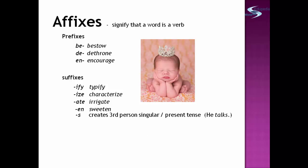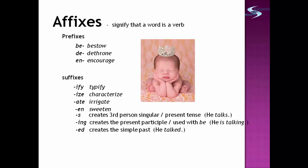You can also add the suffix -s, which creates the third person singular in the present tense — like 'he talks.' Adding -ing creates the present participle, used with 'be' — for example, 'he is talking.' Adding -ed creates the simple past — for example, 'he talked.' Adding -en creates the past participle, usually used with 'have' — for example, 'he has talked,' where 'talked' is the past participle of the verb 'talk.'